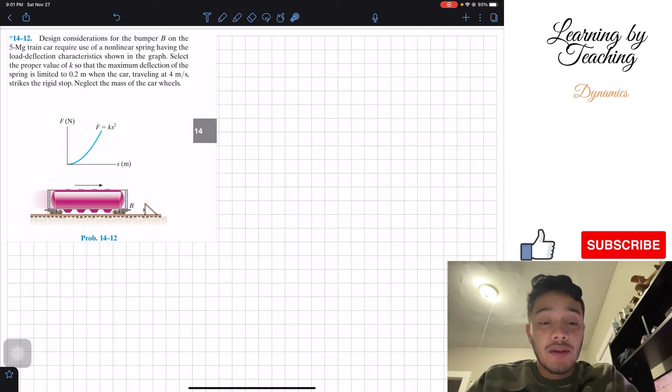Select the proper value of k so that the maximum deflection of the spring is limited to 0.2 meters when the car traveling at 4 meters per second strikes the rigid stop. Neglect the mass of the car wheels.